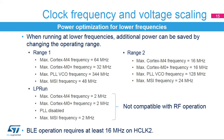In range 1, the clocks of the Cortex-M4 or HCLK and shared bus HCLK-S must not exceed 64 MHz, and the Cortex-M0 Plus clock must not exceed 32 MHz. In range 2, the clocks of the Cortex-M4, HCLK shared bus HCLK-S, and the Cortex-M0 Plus must not exceed 16 MHz. In low-power run mode, the clocks of the Cortex-M4, HCLK shared bus HCLK-S, and the Cortex-M0 Plus must not exceed 2 MHz. BLE operation requires an HCLK-2 clock frequency of at least 16 MHz and is not allowed in low-power run mode.